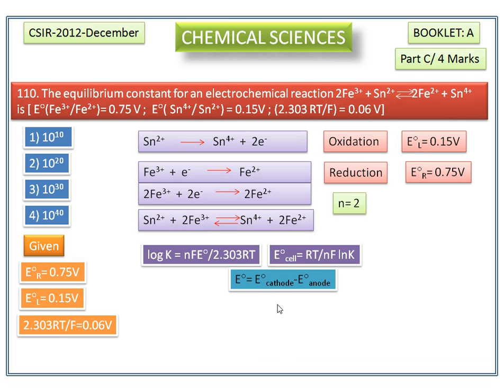We have these two values. Substituting these values in this equation, we get E° cell value of 0.6 volt. The given value is 2.303RT divided by F is equal to 0.06 volt.